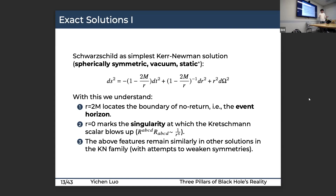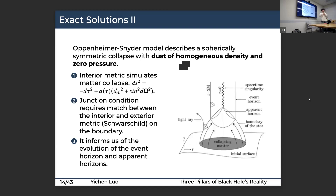These features — event horizons and singularities — remain similarly in other solutions in the Kerr-Newman family with different attempts to weaken the symmetries or matter distribution. For the collapsing spacetime solutions, we choose the Oppenheimer-Snyder-Datt model as representative. It describes a spherical dust collapse with homogeneous density and zero pressure, and requires two parts: an interior metric with a scale factor a changing with proper time, and junction conditions matching the interior metric to the exterior Schwarzschild metric on the boundary.